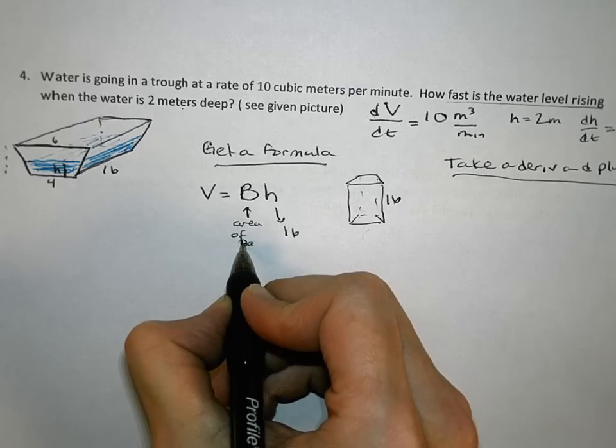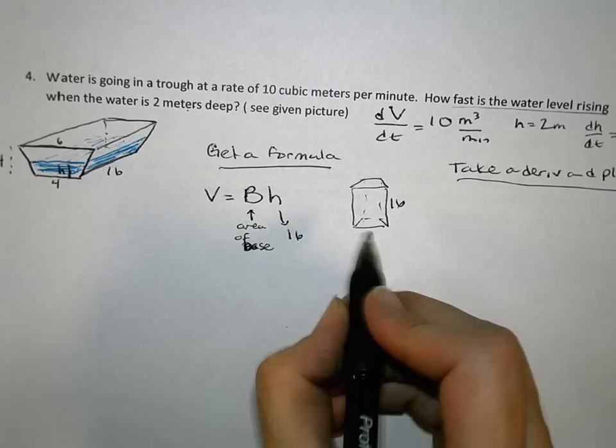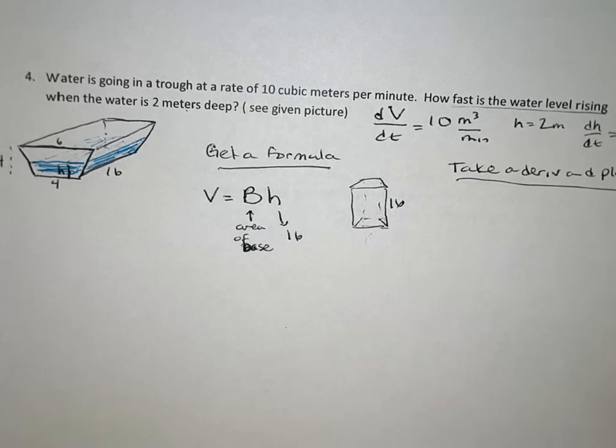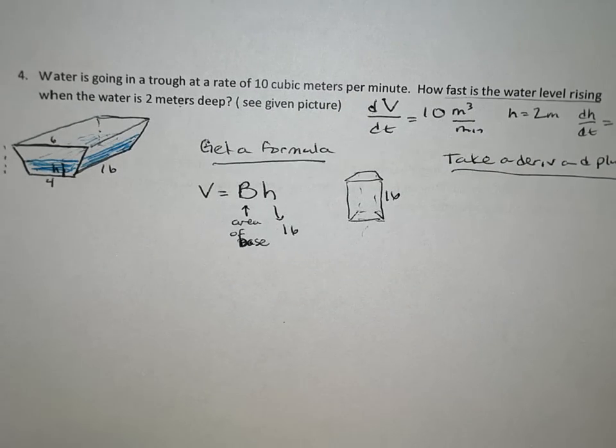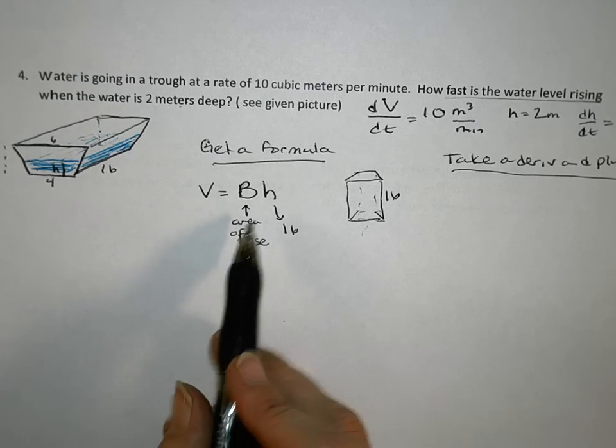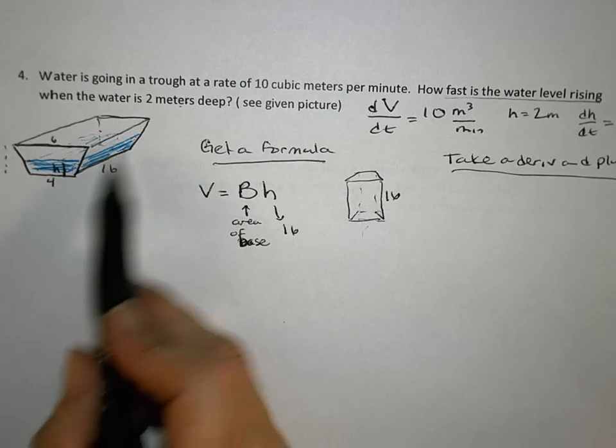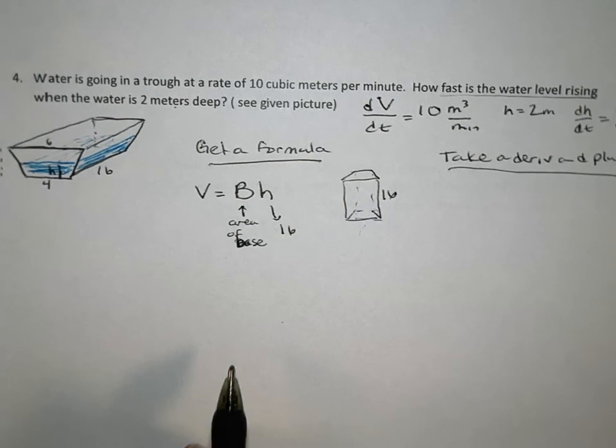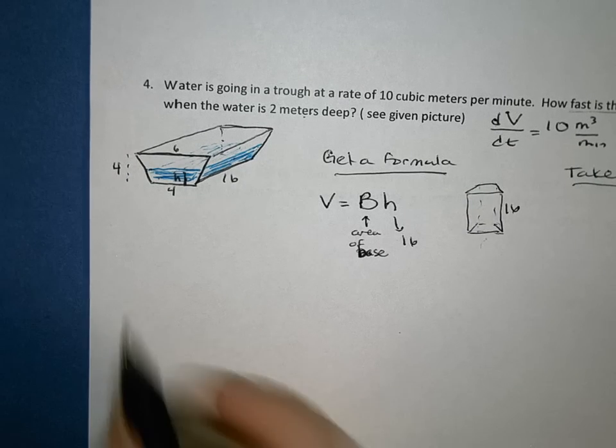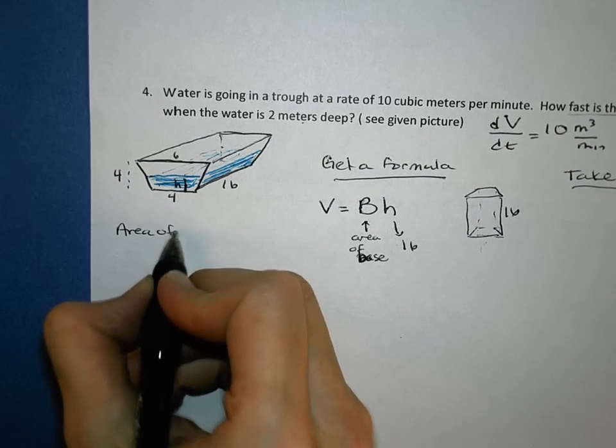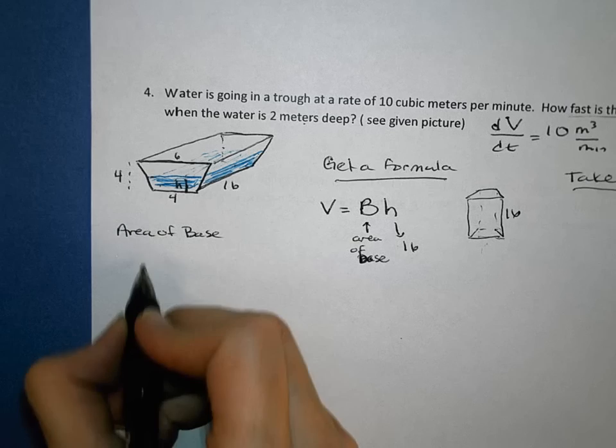In this case, that area is going to be a trapezoid. So we'll take a little bit and work on the area of that trapezoid, because that's the part that we need. This height is 16, it's the height of the whole prism. Okay, so I'm going to move over here and just think about only the base, just getting the area of the base.